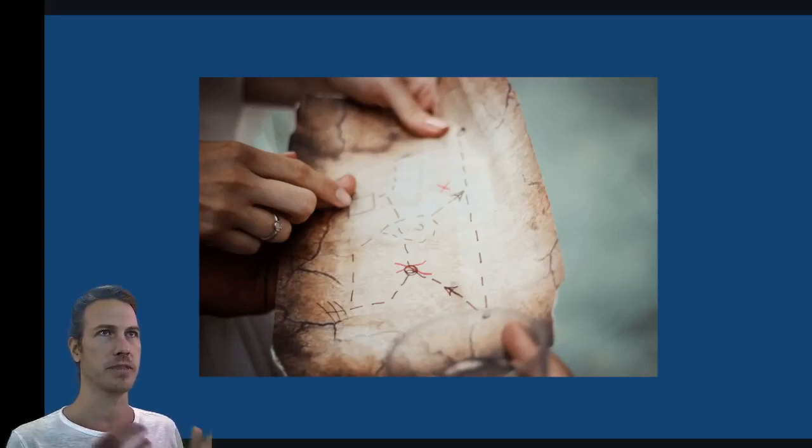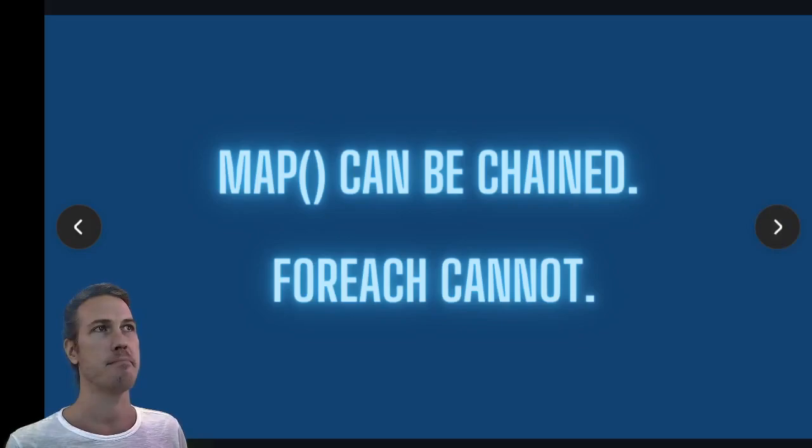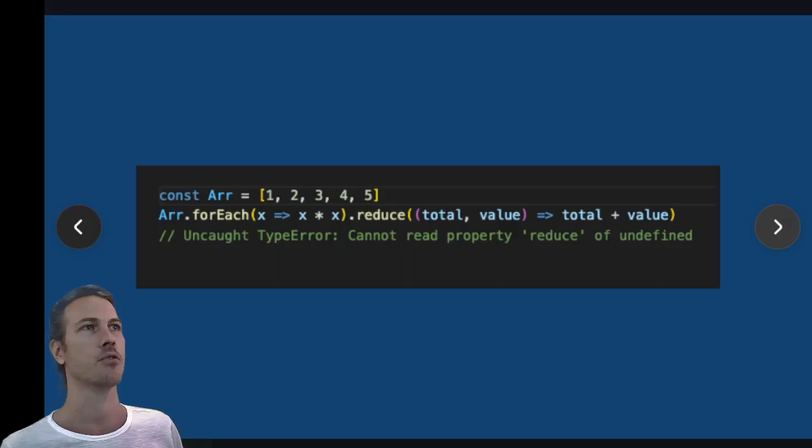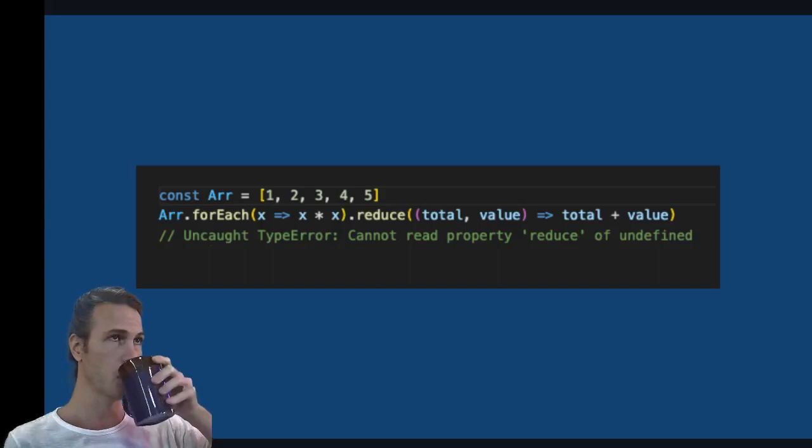Another difference is that map can be chained whereas forEach cannot. And I'm sure several of you have already thought of this because we said previously that forEach returns undefined. So in a situation like this...